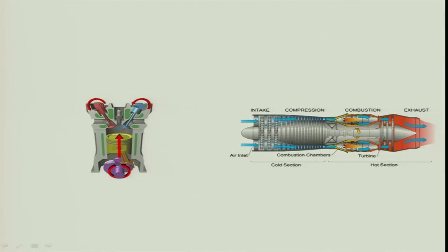Both are internal combustion engines because the combustor is a part of the entire engine — it is inside. Combustion takes place in the piston-cylinder space. This is a spark ignition engine, but in place of the spark plug you can put a diesel injector and change the location depending on your design and utility.